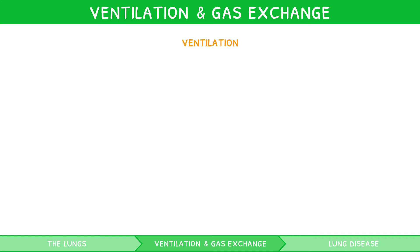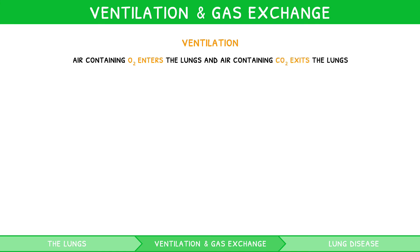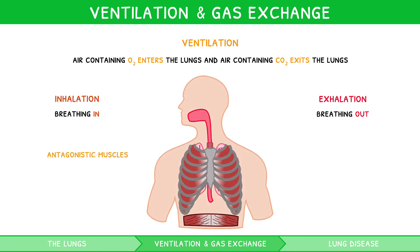Ventilation is the process by which fresh air containing oxygen enters the lungs, and stale air containing carbon dioxide exits the lungs. It occurs thanks to the action of inhalation and exhalation — breathing out. These are two highly organised actions involving the contraction and relaxation of several antagonistic muscles, i.e. muscles that work in pairs to perform opposing movements.